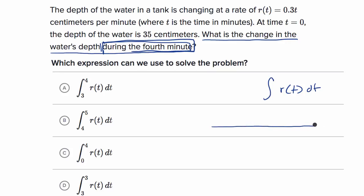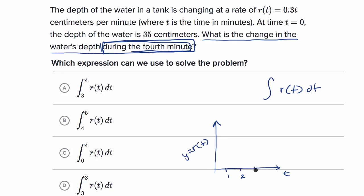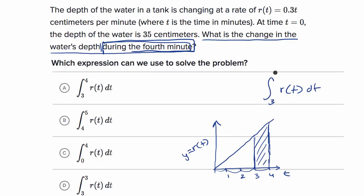Let's draw the whole thing — R of T versus T. The first minute goes from zero to one, second from one to two, third from two to three, fourth from three to four. The rate function looks like a linear function. So the fourth minute goes from minute three to minute four. The expression we want is the integral that gives us the area under the rate curve from three to four — lower bound three, upper bound four — and that is the first choice.